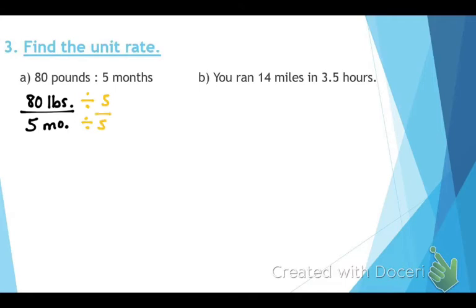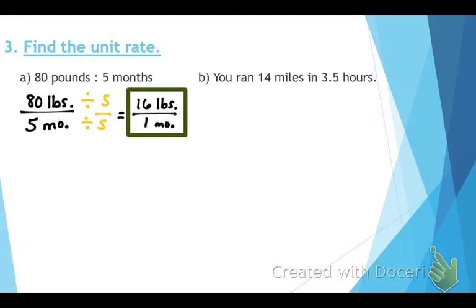Dividing by five on both top and bottom gives 16 pounds per one month. When a problem asks for a unit rate, make sure to attach the units.